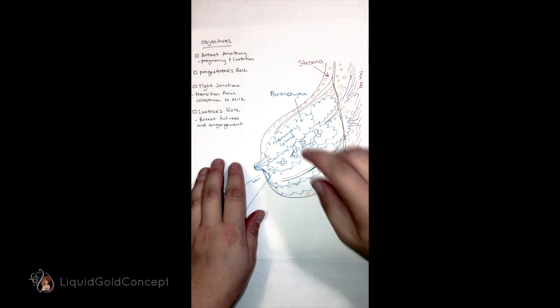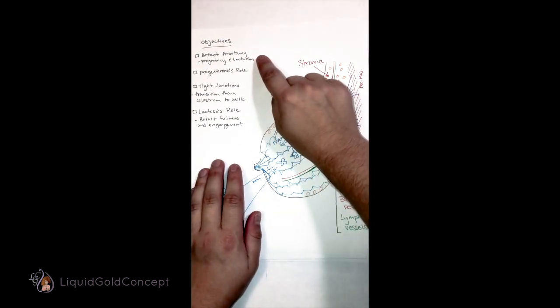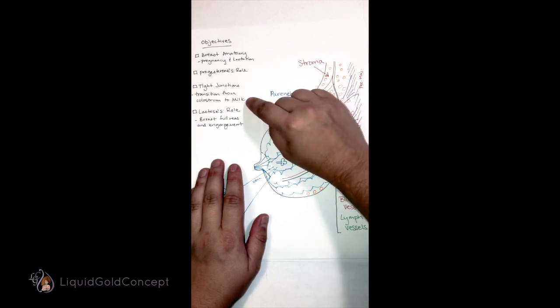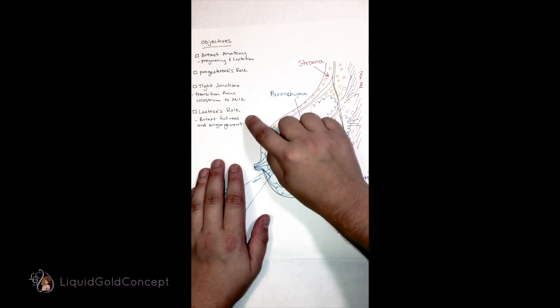The objectives of these videos are first to talk about breast anatomy during pregnancy and lactation, progesterone's role in lactation, tight junctions in the transition from colostrum to milk, and we'll end with lactose's role in breast fullness and engorgement.